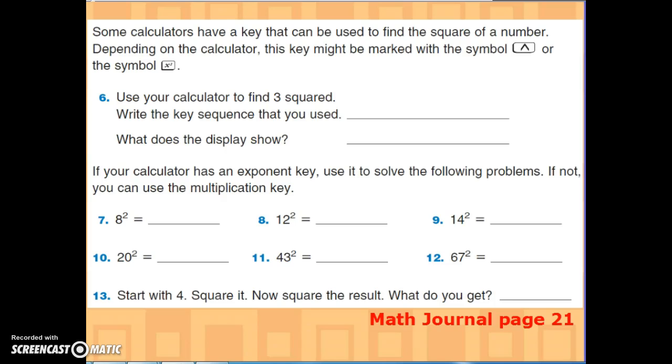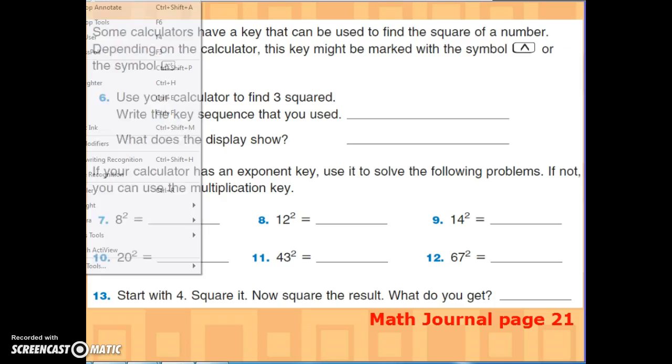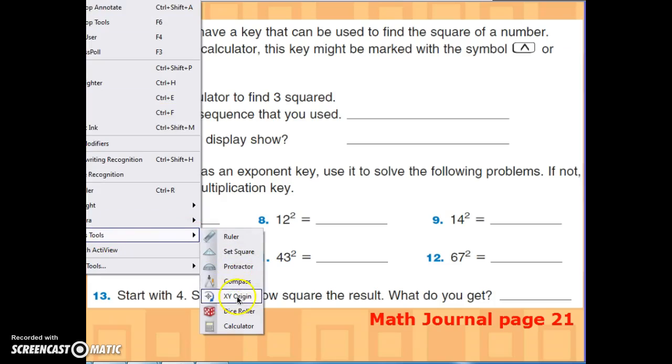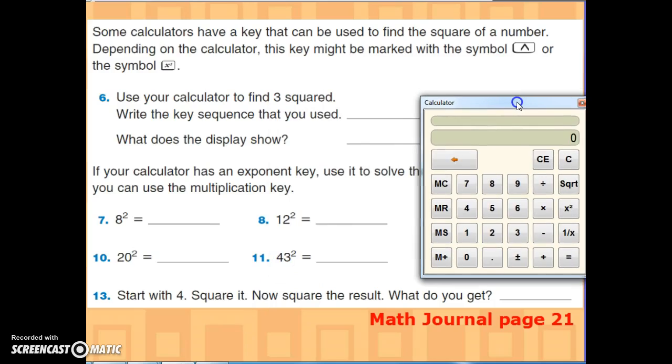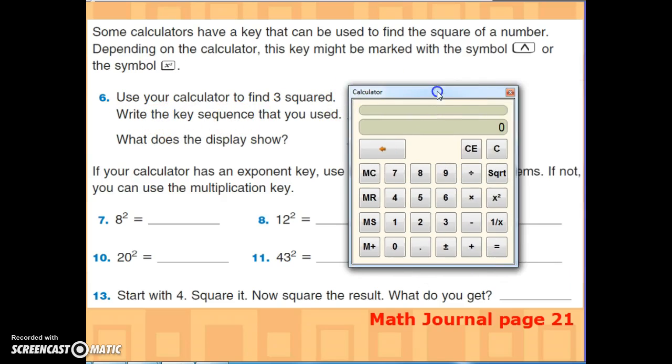If we get our calculator out, you can use your calculator to find square numbers, especially if you're working with larger numbers. So I guess we'll back up here to number six. It says: use your calculator to find three squared. Okay, when you do this, you are going to use a button that looks like this.